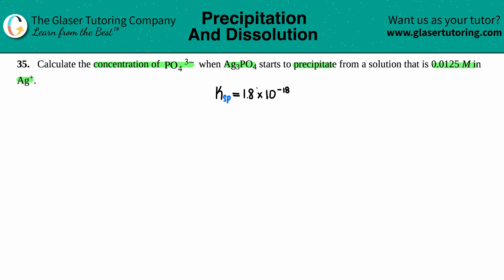I had to go into the back of the textbook to find out what the solubility is of Ag3PO4. It's 1.8 times 10 to the negative 18th. Now we can only use this value when we know that we're at equilibrium and we have a saturated solution.